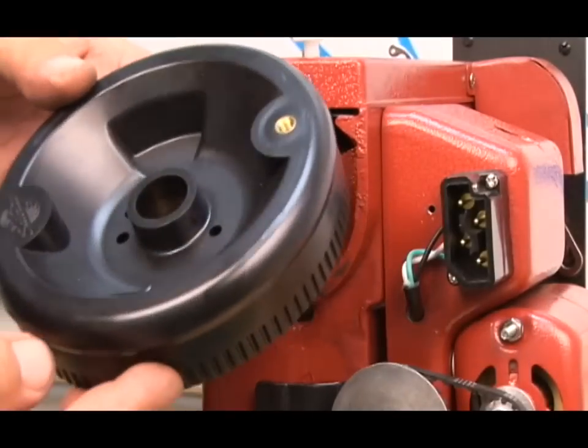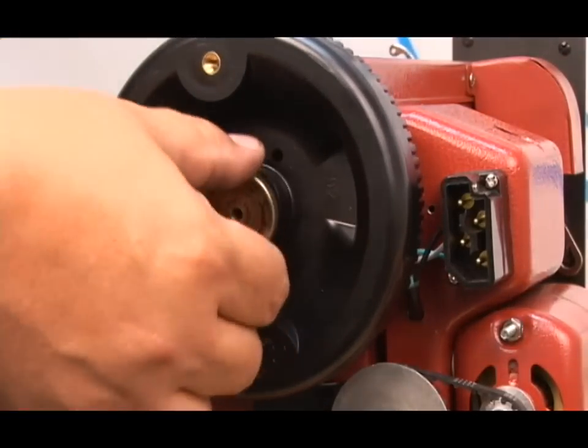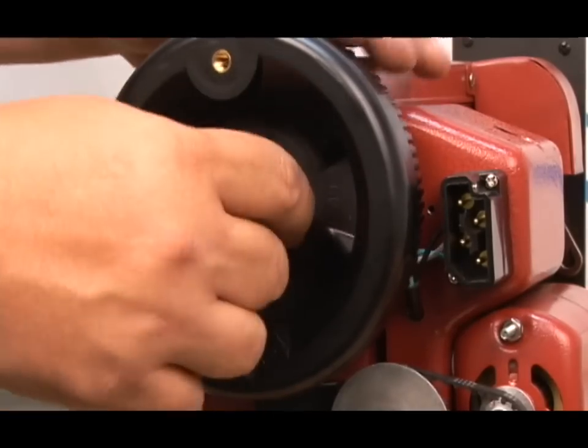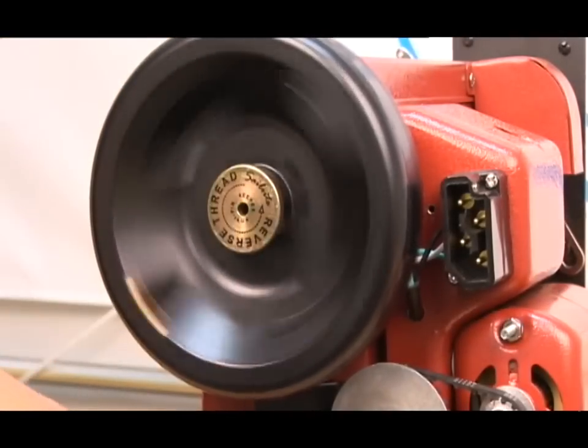There are three choices of balance wheels: the smaller diameter wheel, the Power Plus wheel shown here, or the Monster 2 balance wheel. Install the nut—it's reverse threaded, so lock it in place by turning counter-clockwise.